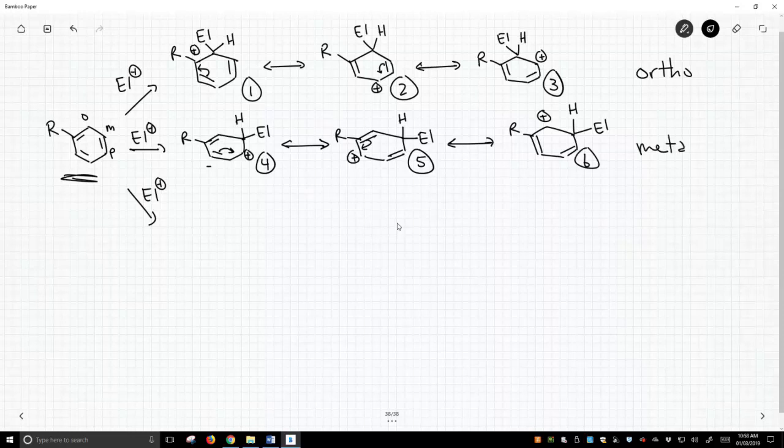Now let's show the para position. If the para position attacks, we're going to break that double bond, attack that electrophile. We get the electrophile at the para position. There's already a hydrogen there, we can't forget that.